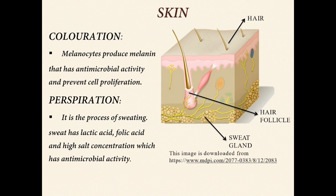Skin: coloration — melanocytes produce melanin that has antimicrobial activity and prevents cell proliferation. Perspiration: sweat contains lactic acid, folic acid, and high salt concentration, all of which have antimicrobial activity.